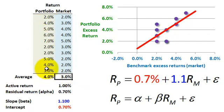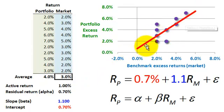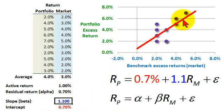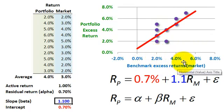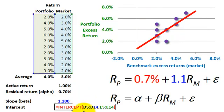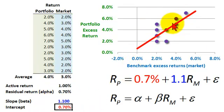If I take those numbers and put them on the scatter plot here, and then we look at the trend line — that's the OLS, ordinary least squares regression line — Excel tells me that the slope is 1.1. The slope is rise over run, so for every 1% increase in benchmark excess return, we'd expect a 1.1% increase in the portfolio expected excess return. Excel also tells me that the intercept is 0.7%, which is where our regression line intercepts the y-axis.